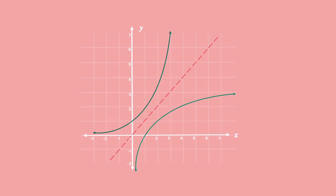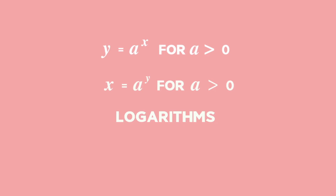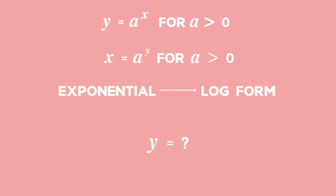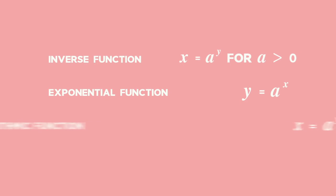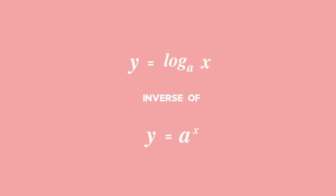What is the formula for this inverse graph? Consider the function y equals a to the power of x. To find its inverse, swap x and y and you get x equals a to the power of y. The next step is to make y the subject of the formula. However, y is the exponent, so solving the exponential equation will require logarithms. By using logs, we convert from exponential to log form and thus make y the subject. The inverse of an exponential function is a logarithmic function, and we say that y equals log base a of x is the inverse of y equals a to the power of x.